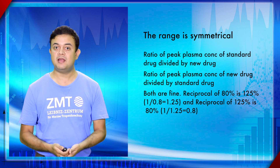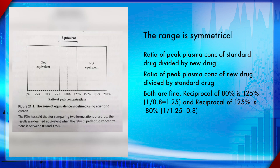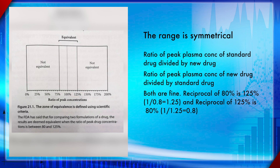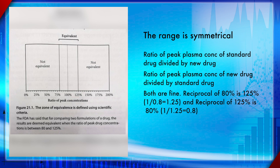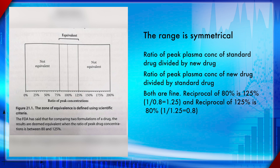Drug formulations are bioequivalent per the FDA if the ratio is between 0.8 and 1.25 and the entire confidence interval range falls within. Looking at the diagram with drug candidates A, B, and C, which among these drugs have bioequivalency as per the FDA guideline?